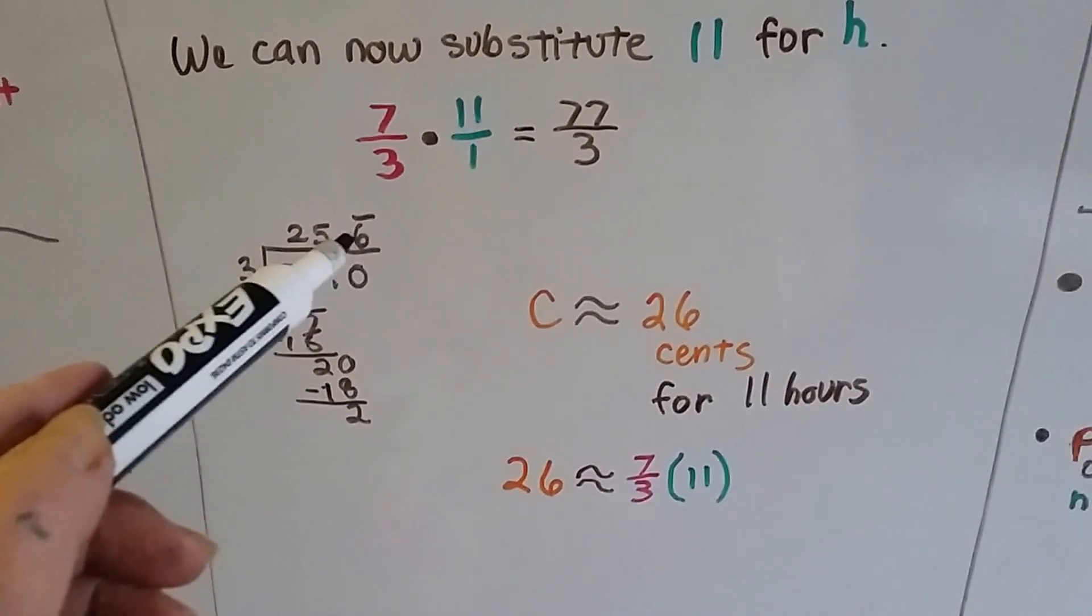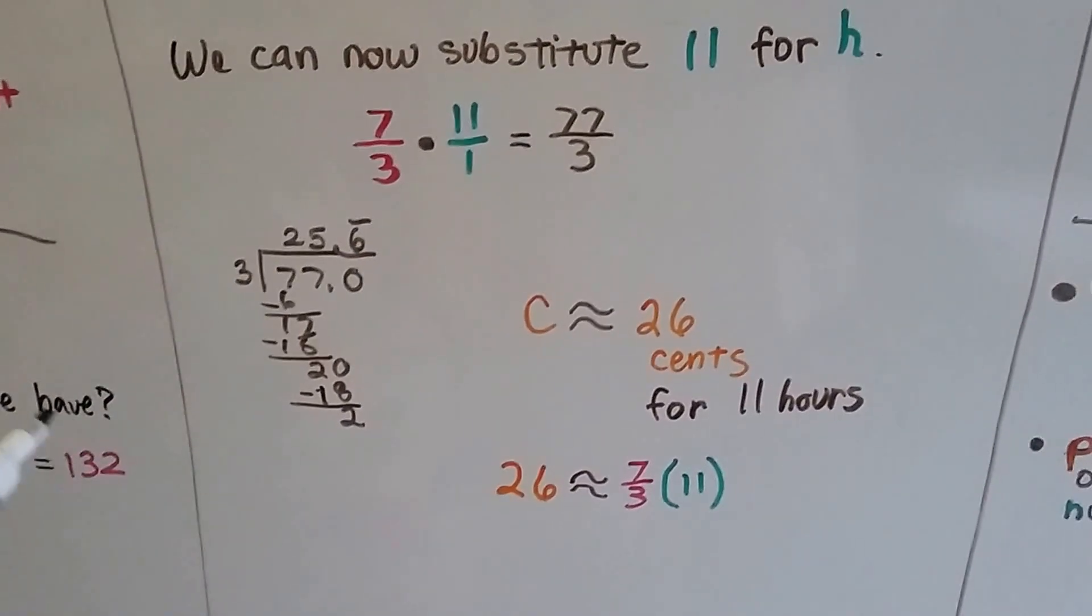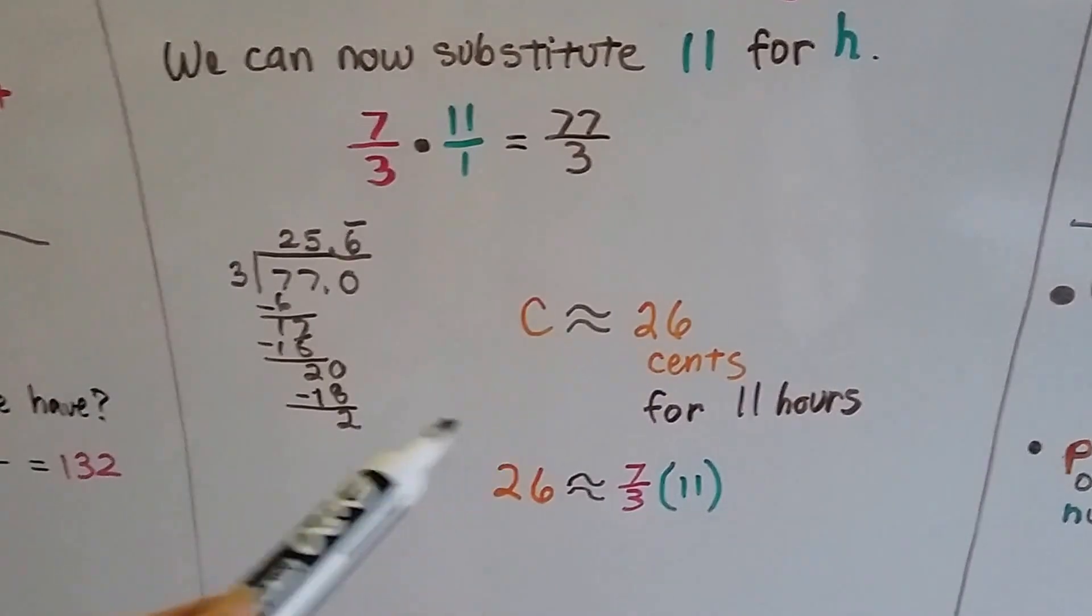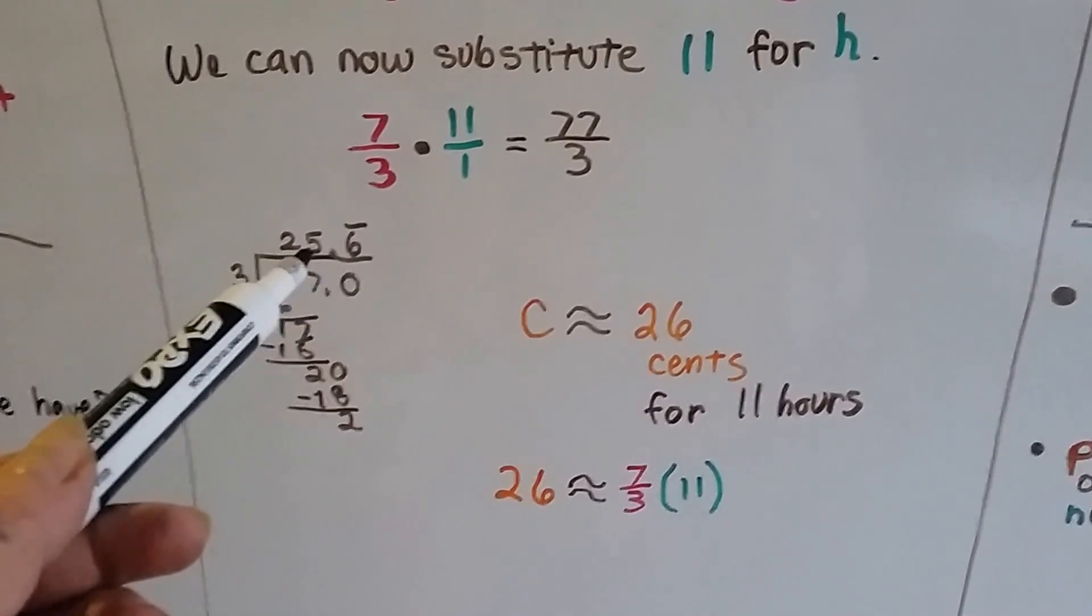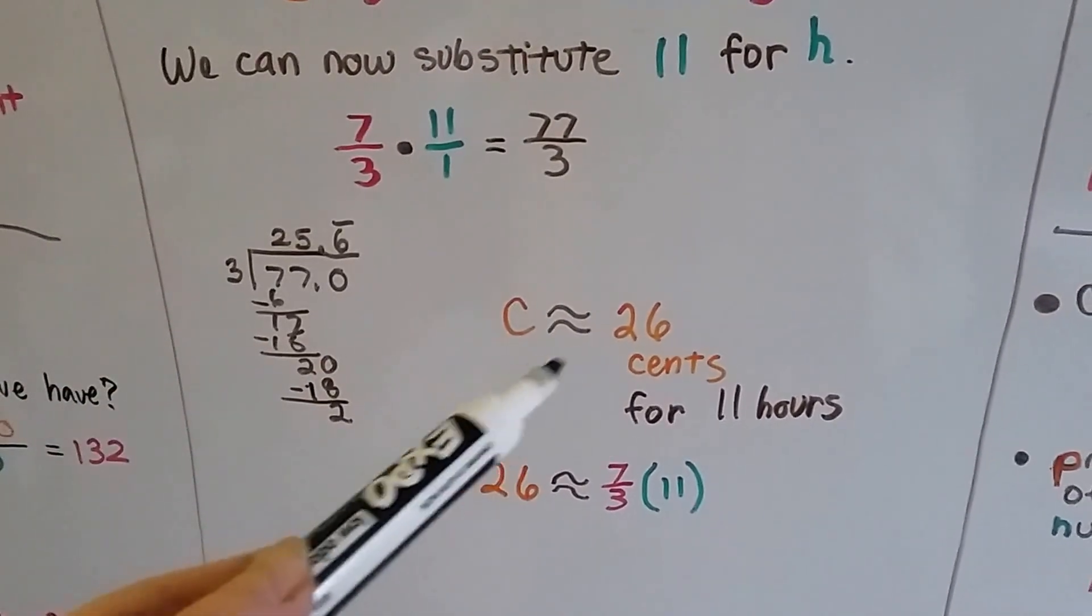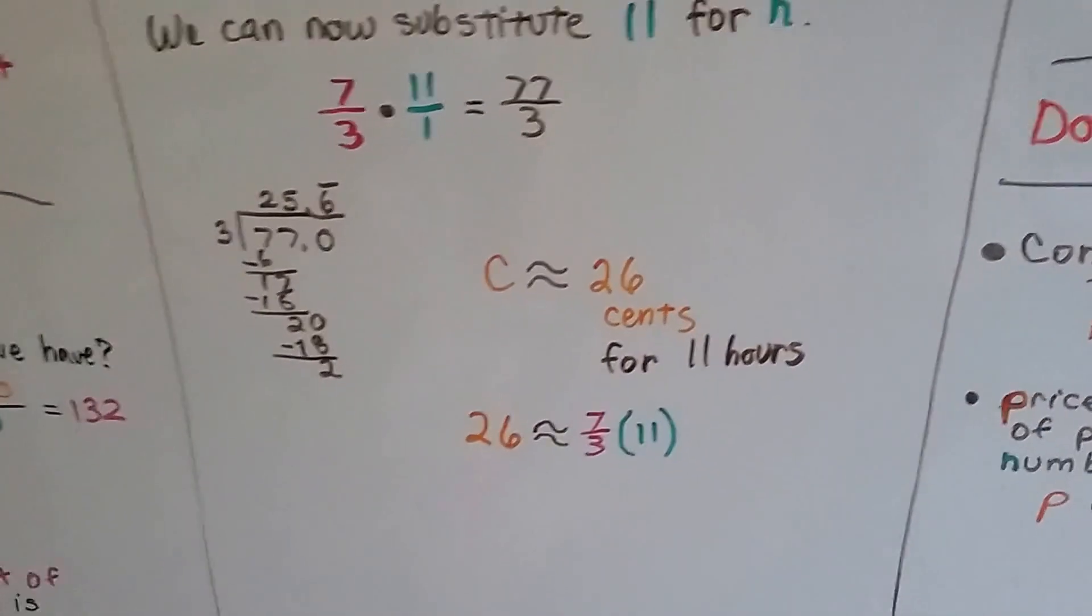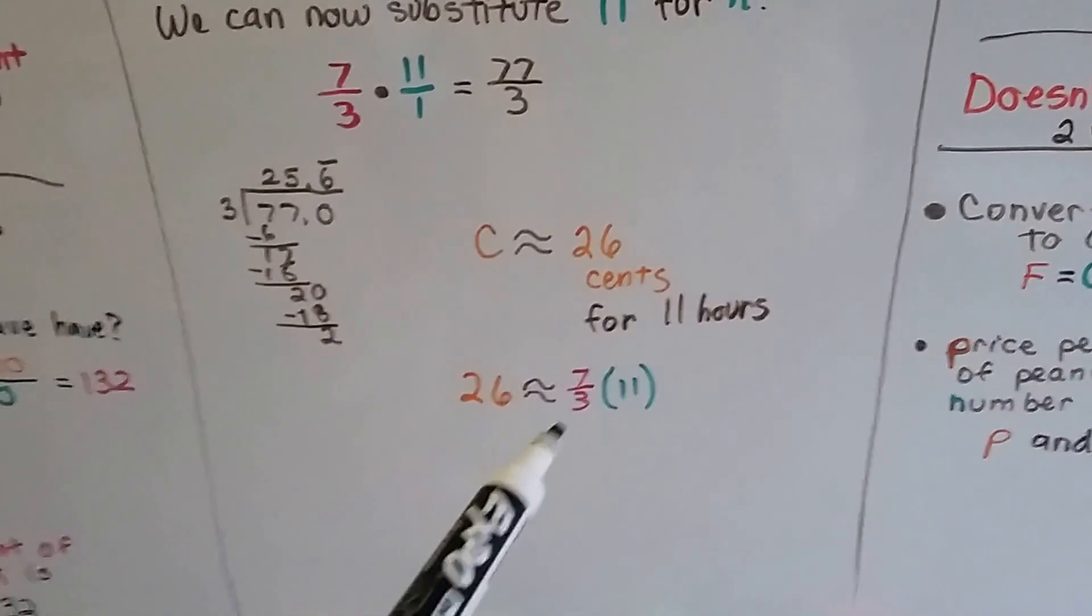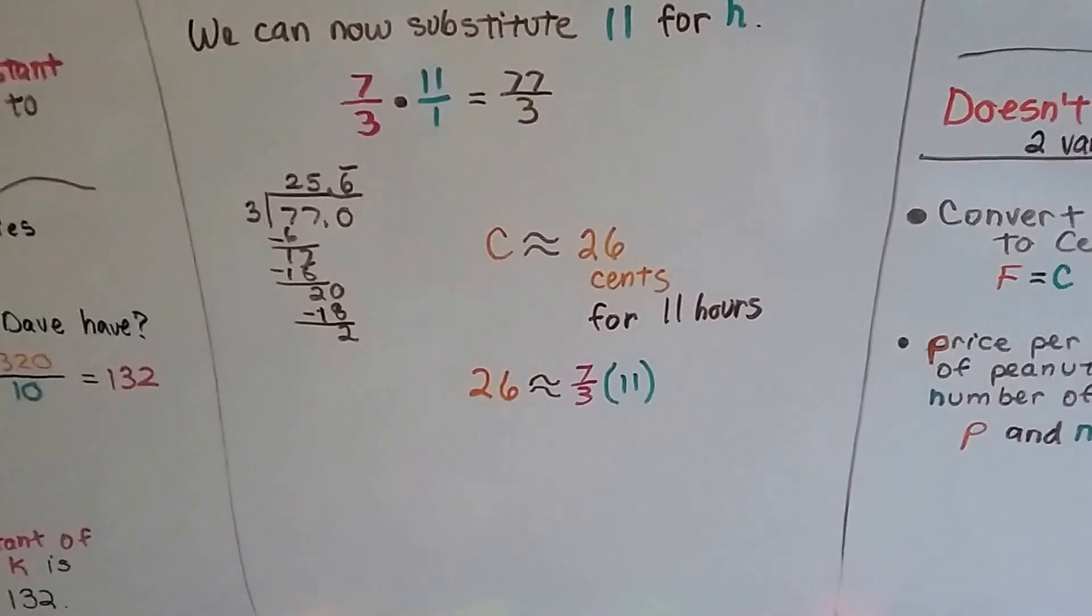I could keep dropping down zeros and it's still going to be 2 thirds, 2 thirds, 2 thirds. So it's going to be a 6 repeated. I'm just going to round it off and use an approximation symbol. The 6 is going to make it round up to 26 cents. So the cost for the 11 hours is approximately 26 cents.